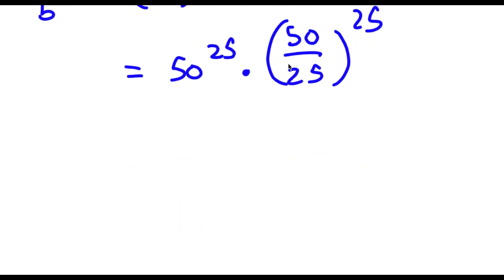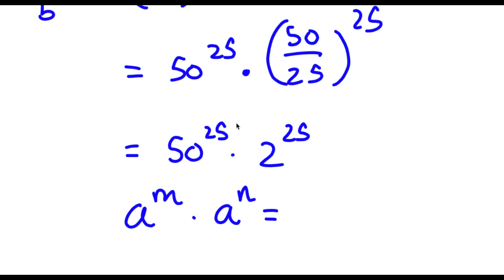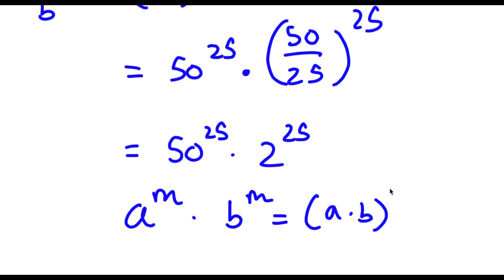Now 50 over 25, this is the same thing as 2. So now this is equal to 50 to the power of 25 times 2 to the power of 25. Now if I have something in the form a to the power of m times b to the power of m, this is equal to a times b to the power of m.